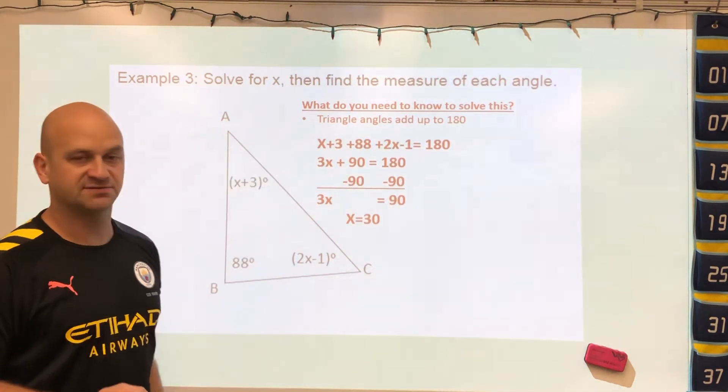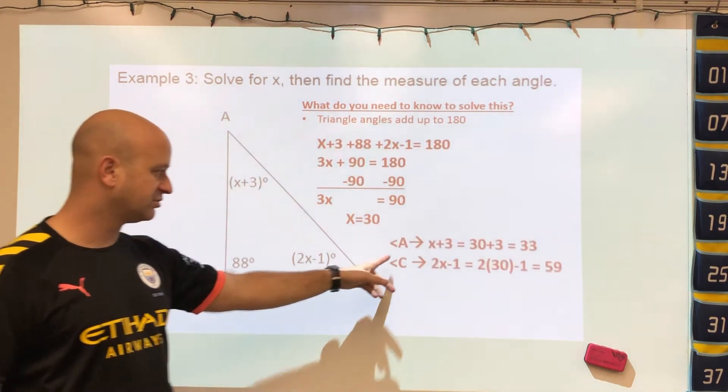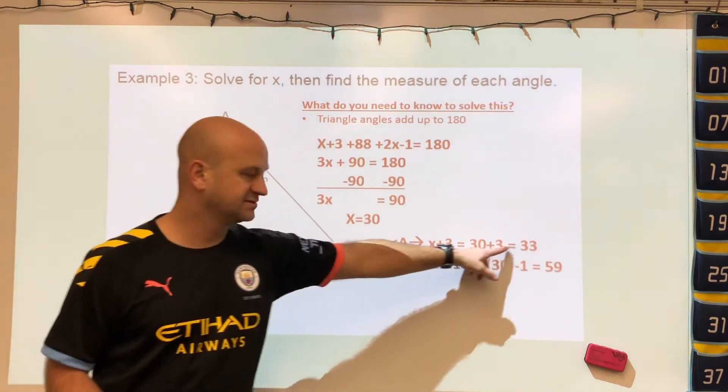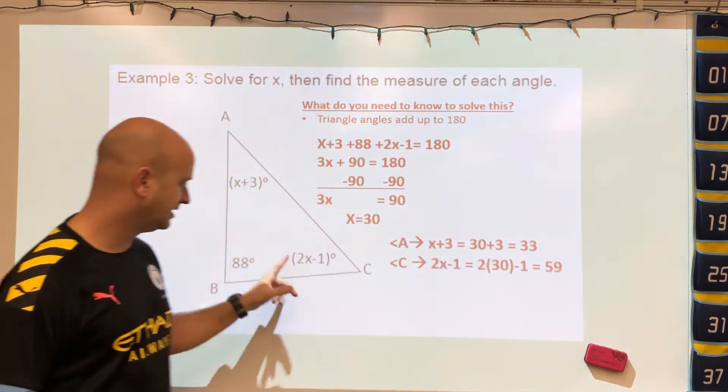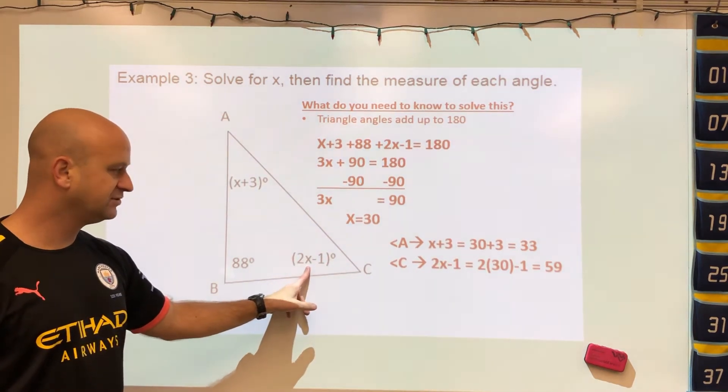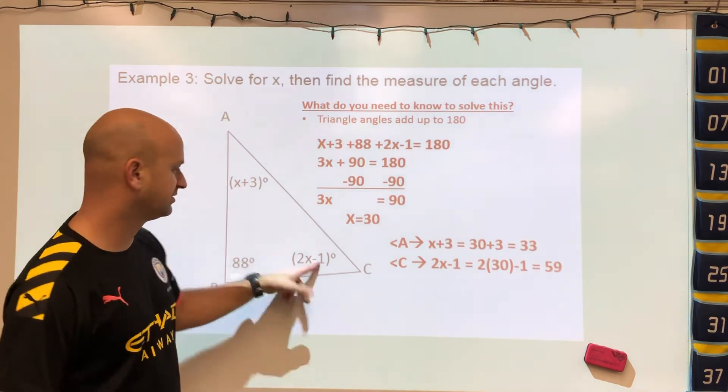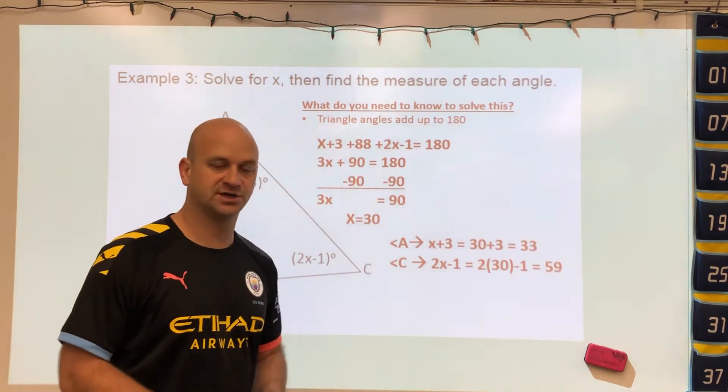The directions do say find the measure of each angle, so now we have to plug them in. For angle A, our 30 plus 3 gives us a value of 33. Angle C would be 2 times 30 minus 1, which would be 59. If you added up all three of those, they'll equal 180 degrees.